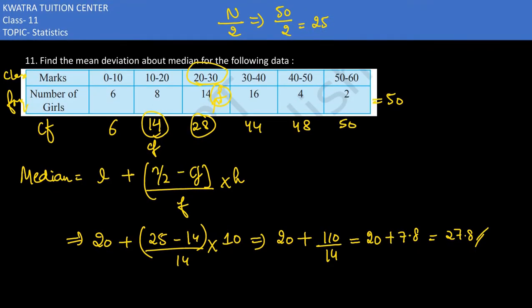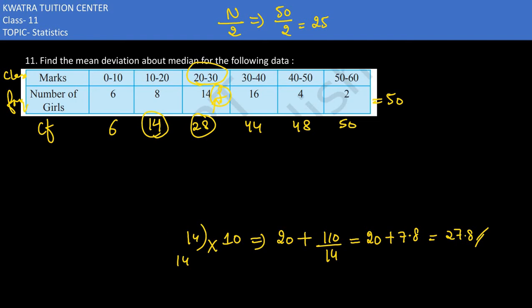Here you have the median. The next step, you need to find the mean deviation about the median. For that, you need to extend this table. We note the median is 27.8. We extend this table - first, class mark or midpoint, because that is the important thing.